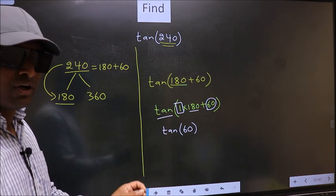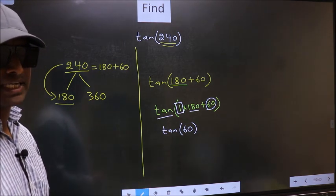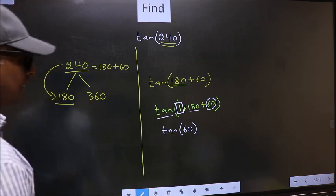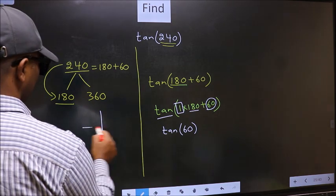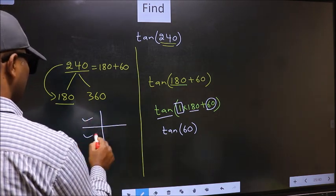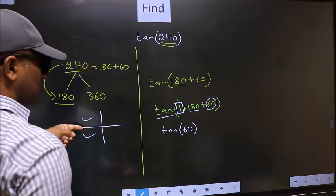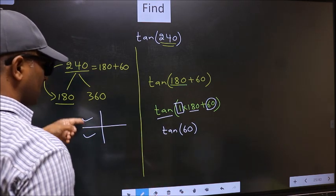And all the odd multiples of 180 lie either in the second or in the third quadrant. So, to select the quadrant, we should look at this symbol.